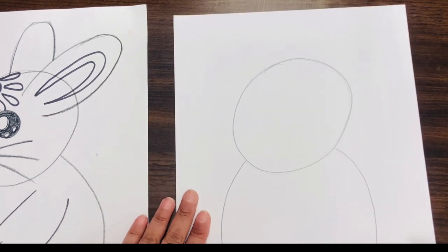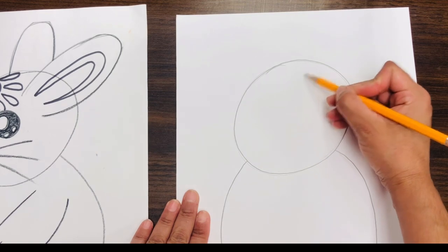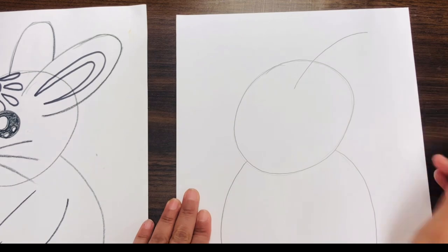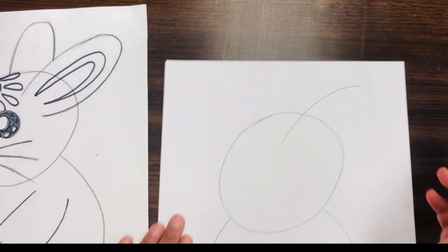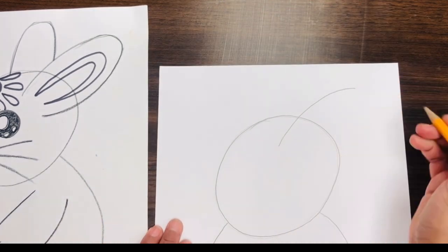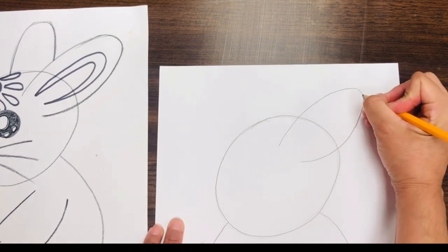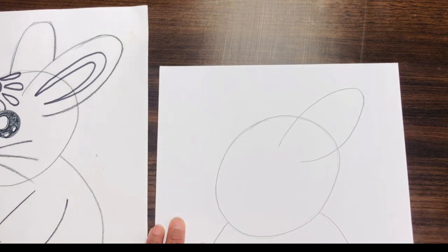Now we're going to do the ears. First, I'm going to start with one ear here, curvy line, and curvy line on this side. And then I'm just going to round up the little edge right here.